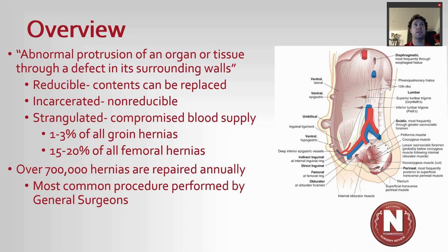What is a hernia? A hernia is an abnormal protrusion of an organ or tissue through a defect in its surrounding walls. Contents can be reducible, incarcerated, or strangulated. Hernia repair is one of the most common procedures we perform as general surgeons, with over 700,000 hernias repaired annually.